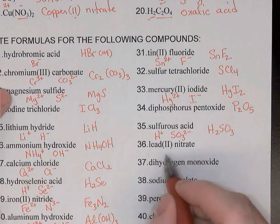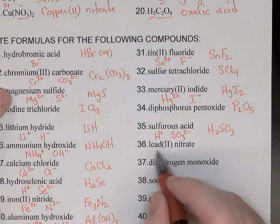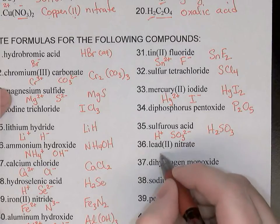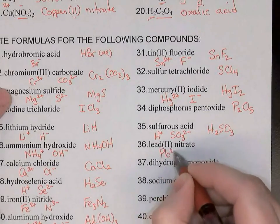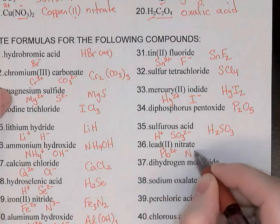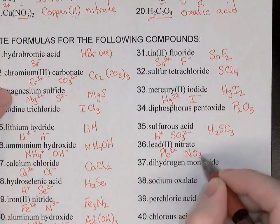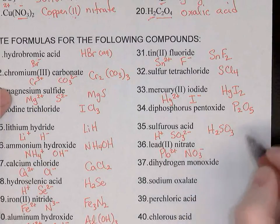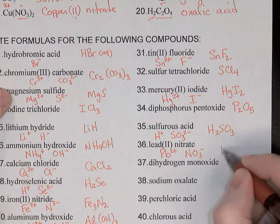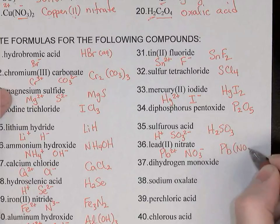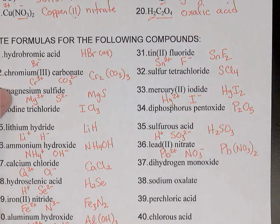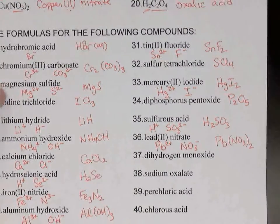Lead(II) nitrate: ionic — metal and a complex ion. Lead here is 2+, and nitrate is NO3-. So Pb and two nitrates: Pb(NO3)2.